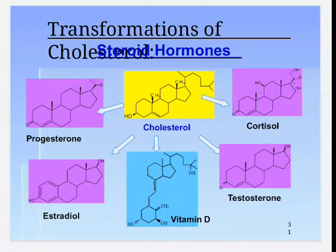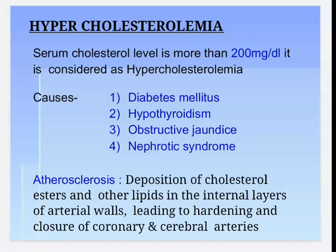Regarding steroid hormones: as discussed, the degradation of cholesterol produces bile acids, steroid hormones, and vitamin D. Cholesterol is converted into different types of hormones including progesterone, estradiol, vitamin D, testosterone, and cortisol.